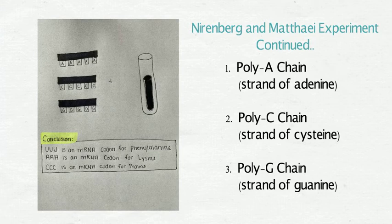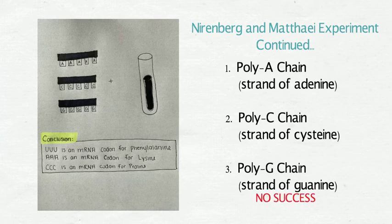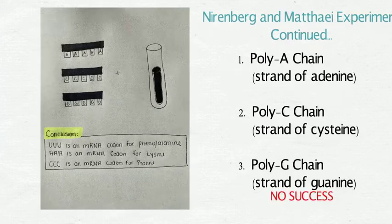From these three experiments, Nirenberg and Matthaei found that poly-A chains form a protein with lysine, and poly-C chains form a protein with proline. However, unlike the poly-U and poly-A chain experiments, Nirenberg and Matthaei had no success in finding poly-G chain codons.